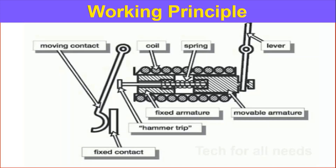The MCB has a fixed contact and a moving contact. This is the fixed contact, this is the moving contact. This is the bimetallic strip. This is the thermal trip unit. This is a coil for short circuit protection.